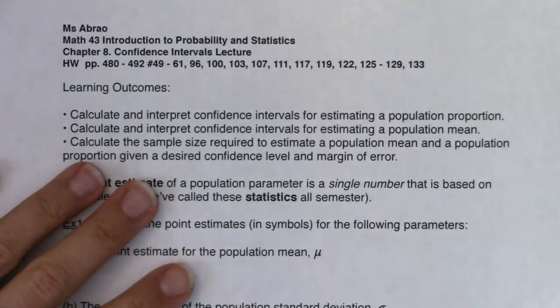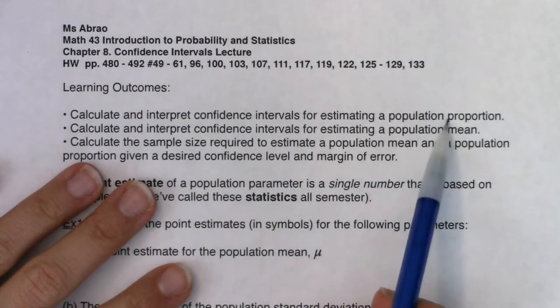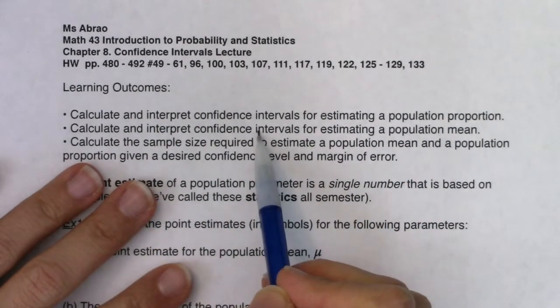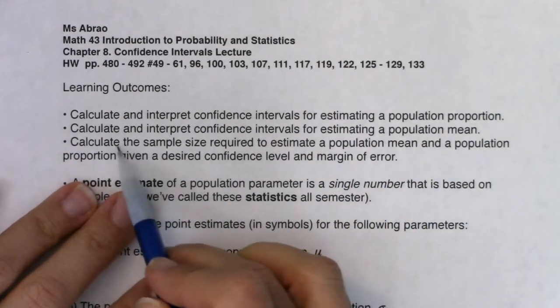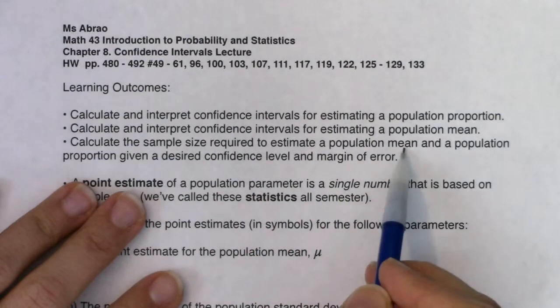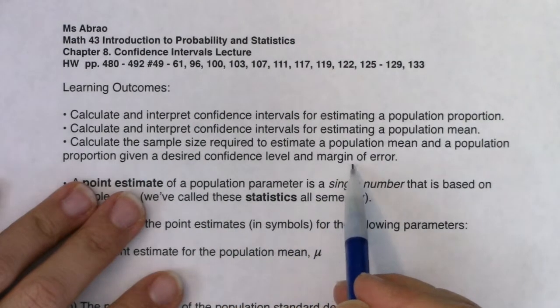Let's take a look at our learning outcomes. We want to calculate and interpret confidence intervals for estimating a population proportion, and we want to calculate and interpret confidence intervals for estimating a population mean. Then we want to calculate the sample size required to estimate a population mean or proportion given a desired confidence level and margin of error.